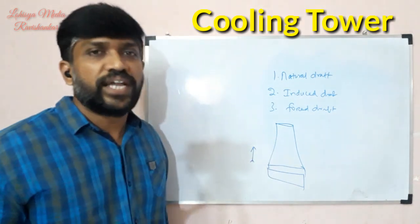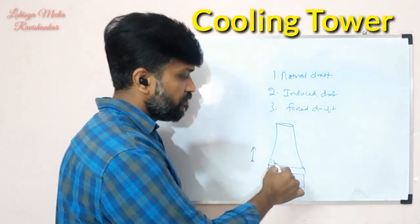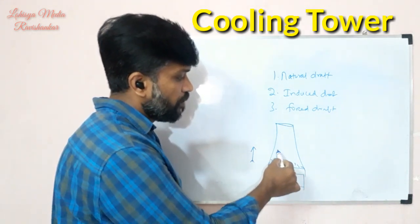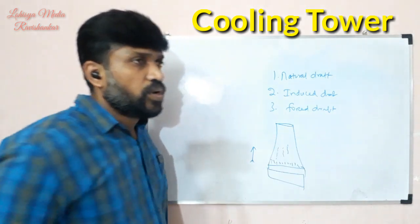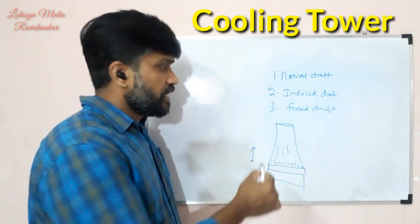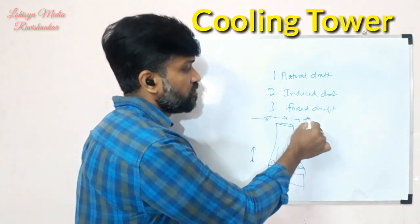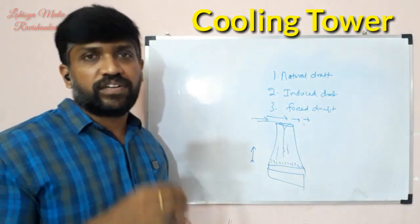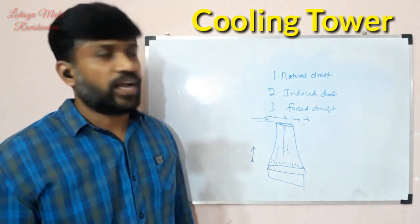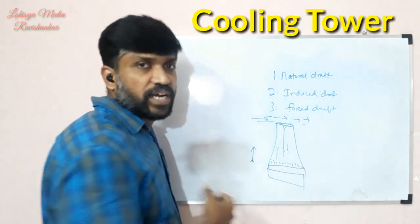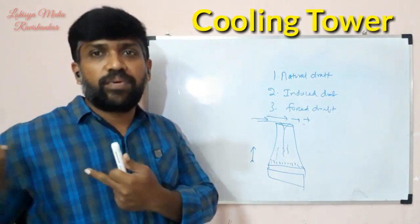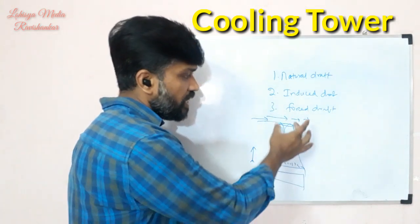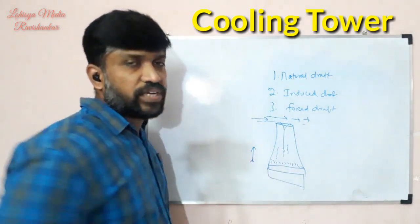Suppose there is heat in the water; it flows through the pipe. The heat will automatically travel upward through the pipe. The air moves in one direction and will automatically carry the heat out. This is the Venturi effect — basically, the heat rises due to the Venturi effect. This is the concept of natural draft cooling towers.